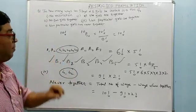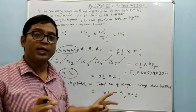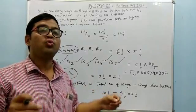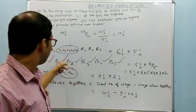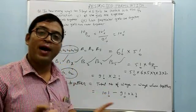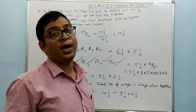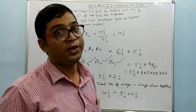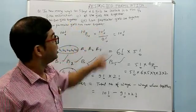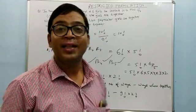Never together and gap method are now clear. For no two things together, follow the gap method. For never together situations, use total number of ways minus the number of ways in which they are together. This restricted permutation is very clear — you can solve these problems conveniently and easily.